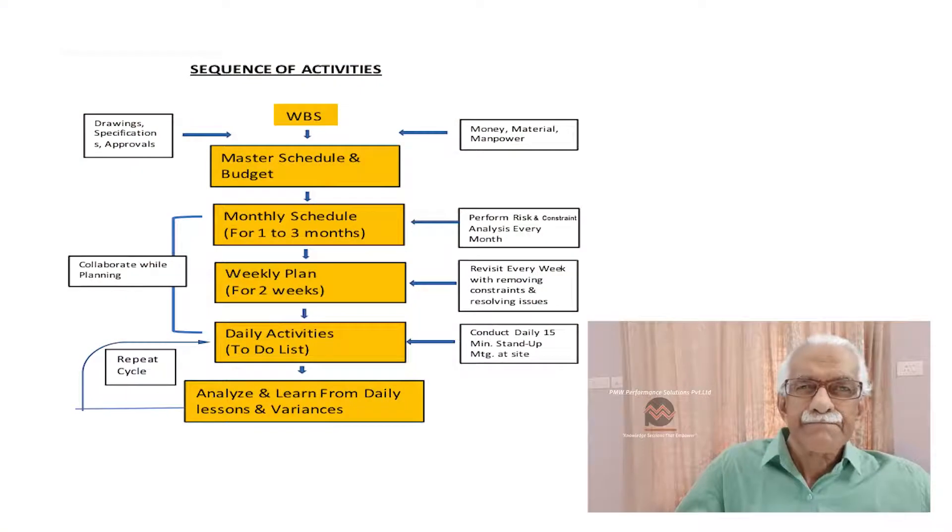The first step is to create a proper work breakdown structure. One of the prime rules in this work breakdown structure is that every level should have 100% scope on the level above it. I'm just mentioning only this one important rule.